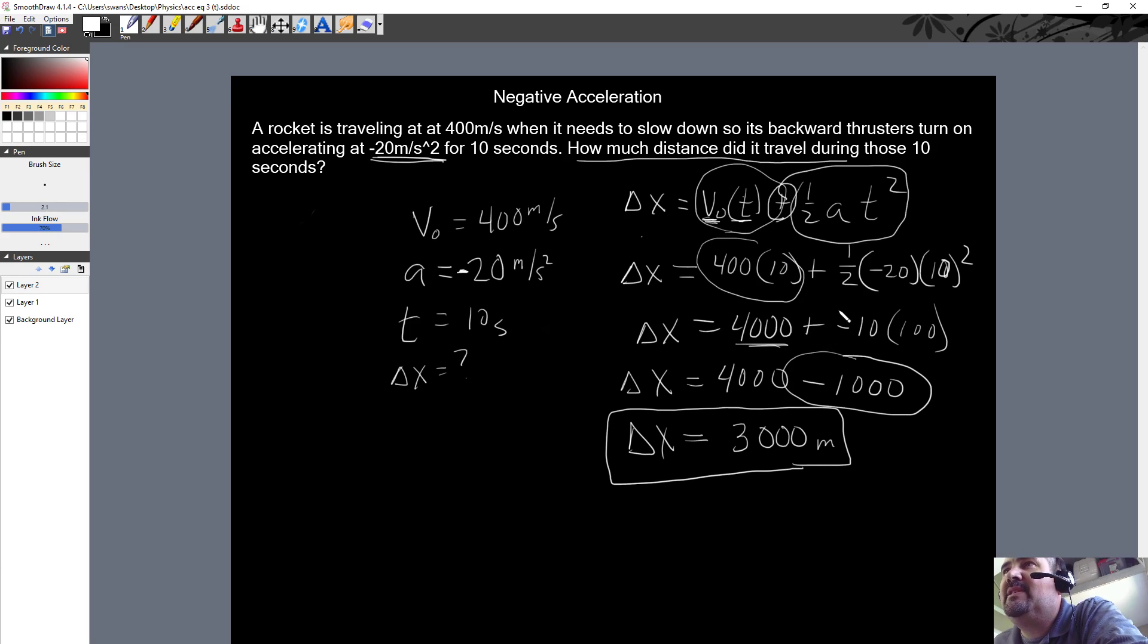In our case, we slow down, so we're subtracting out distance that it would have traveled if it would have stayed that original v, the 400 meters per second. It would have traveled this far, but we're taking away distance because it slowed down. This little chunk of the equation actually figures that out for you—how much you need to add or subtract. This section of the equation subtracts that distance for you automatically depending whether you're speeding up or slowing down.